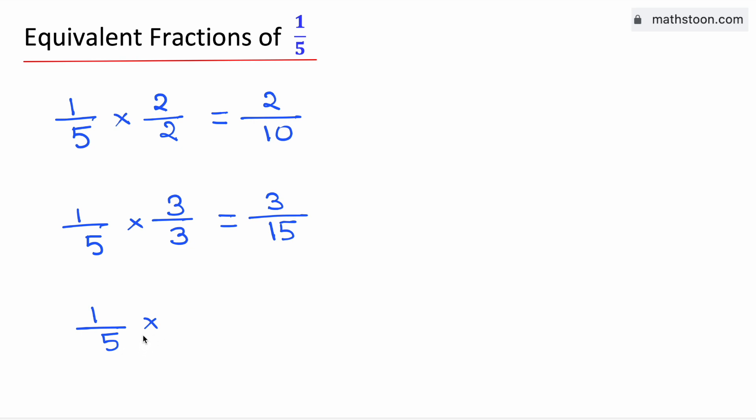And to get the third equivalent fraction, we will multiply both the top and the bottom by the same number 4. By doing so, we have 4 by 20.